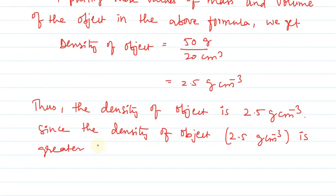Water ki density se. Greater than density of water. Density of water kitna diya gaya hai? 1 gram per centimeter cube diya gaya hai.